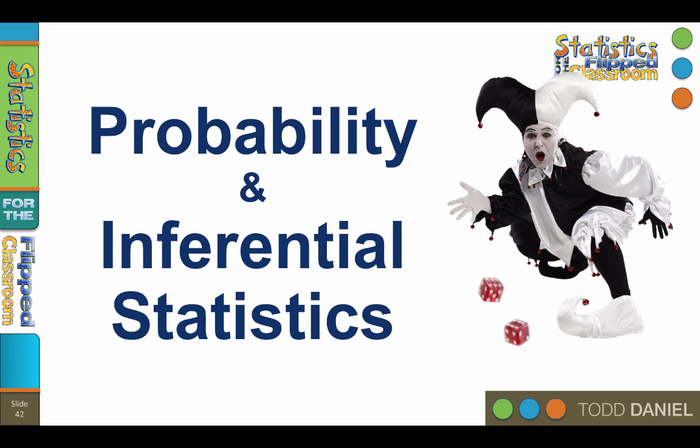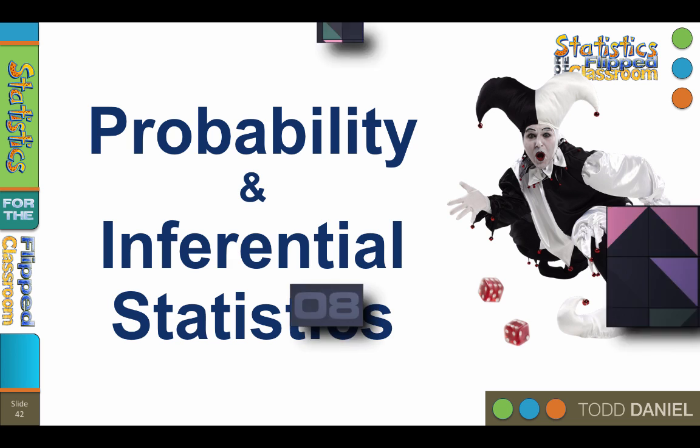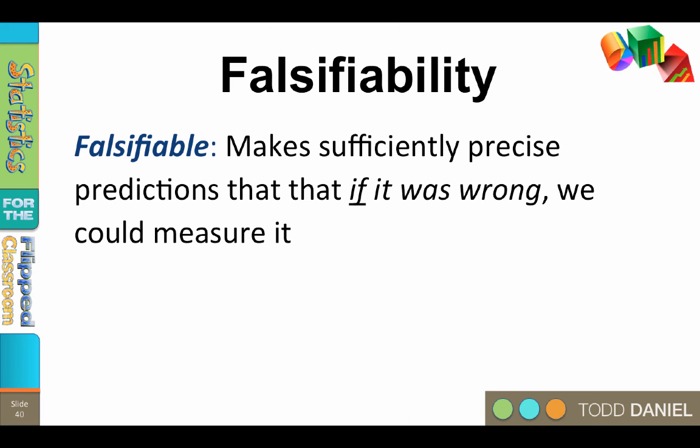A good theory is falsifiable. Falsifiability explains why we use null hypothesis testing. Falsifiability means that a theory makes sufficiently precise predictions that if it was wrong, we could measure it. This does not mean that the theory is false. It means that if the theory was false, we could know. Not all theories are falsifiable. Some theories cannot be demonstrated false, and those theories are not particularly useful.